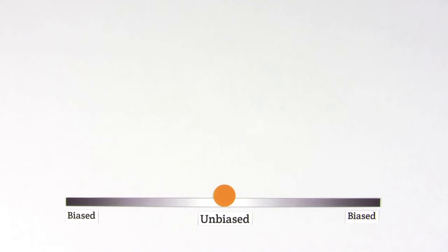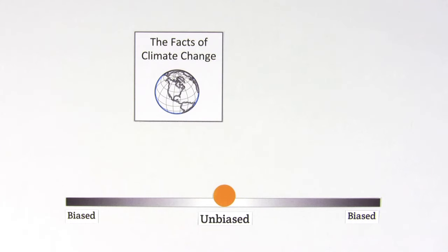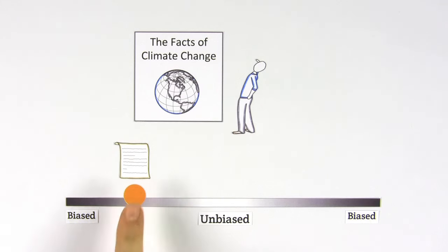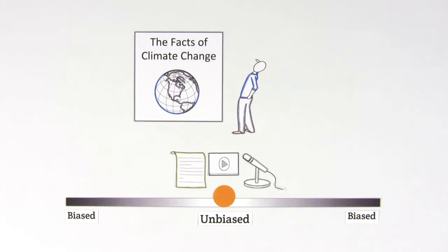For example, to understand the current state of climate change, you can't depend on one team's biased perspective. You need information that is neutral, fair, and unbiased.